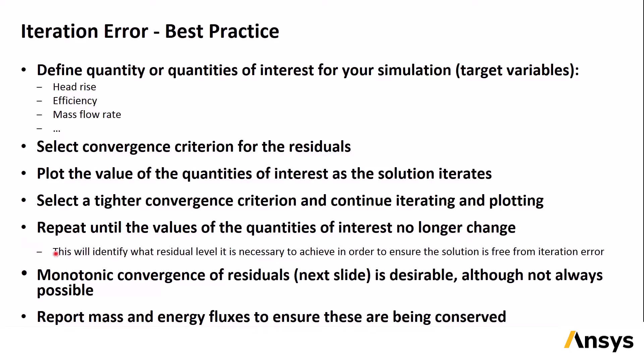As it says on the slide, this way you will know how low the residuals should be to ensure that you're not getting any iteration errors. When you do this, it's best if there is a monotonic decrease in the residuals, although that's not always possible. And finally, at each convergence level, be sure to check flux reports for mass and energy balances.